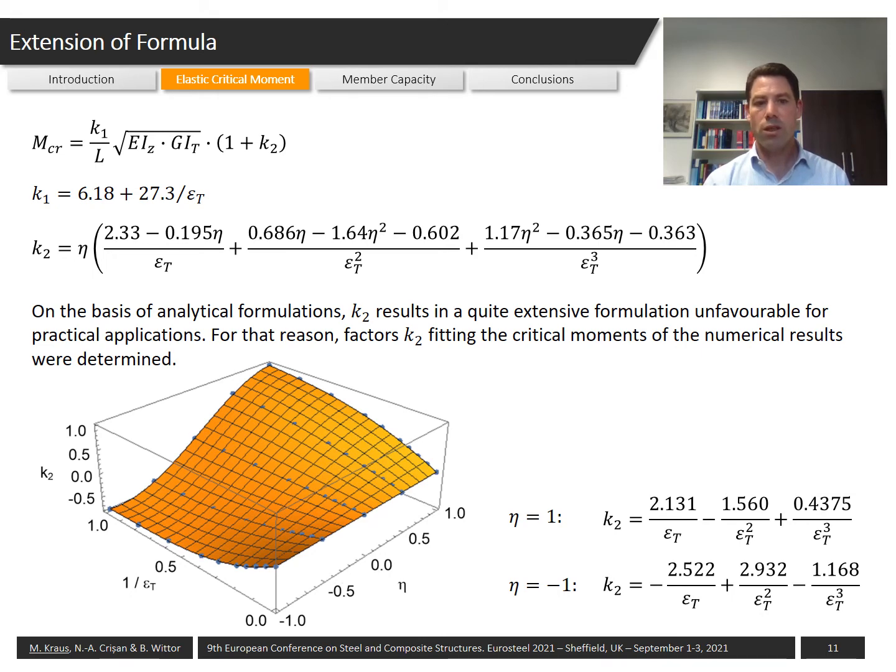For that reason, we thought about a new solution in this paper where we subdivided the k factor into two factors k1 and k2. k1 gives an accurate solution for the elastic critical moment in case the load application is at the shear center, where k2 is a correction factor if load application is not in the shear center but for instance at the upper or lower flange of the cross section.